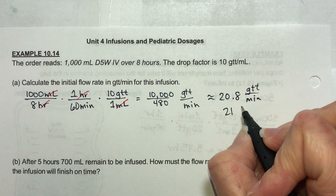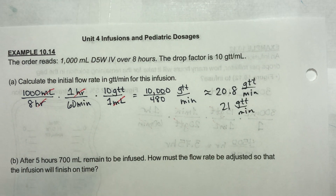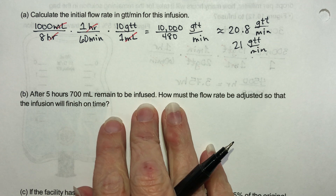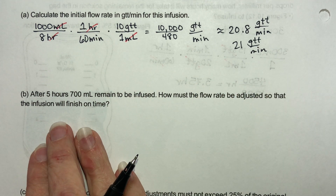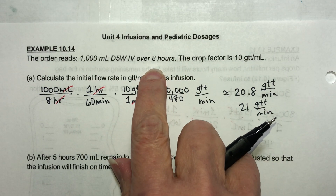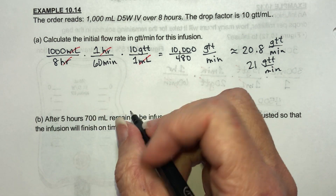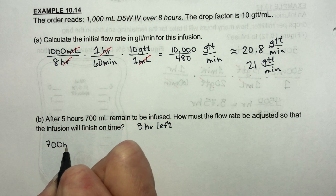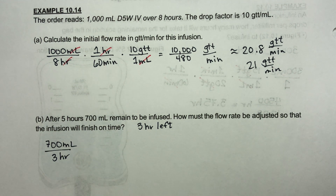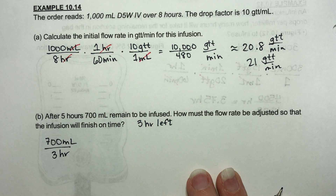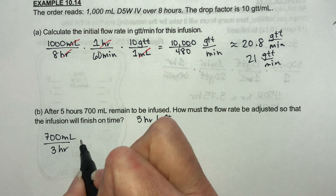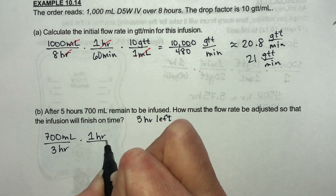They would probably round this to 21 drops per minute. After five hours there are still 700 milliliters remaining. How should we adjust the flow rate so that it finishes on time? The original order was 8 hours; we've used 5 hours, so we have 3 hours left. We need to infuse 700 milliliters in 3 hours. We'll follow the same dimensional analysis, still converting to drops per minute, using 1 hour over 60 minutes.